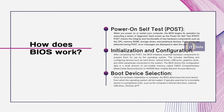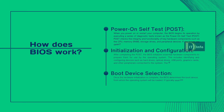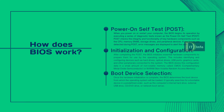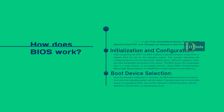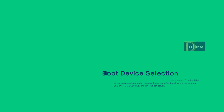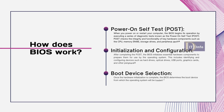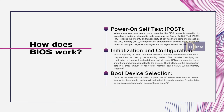After completing the POST, the BIOS initializes essential hardware components to prepare them for use by the operating system. This includes identifying and configuring devices such as hard drives, optical drives, USB ports, graphics cards, and other peripherals. The BIOS stores this configuration data in a small amount of non-volatile memory called CMOS (Complementary Metal Oxide Semiconductor) or NV-RAM (Non-Volatile Random Access Memory).